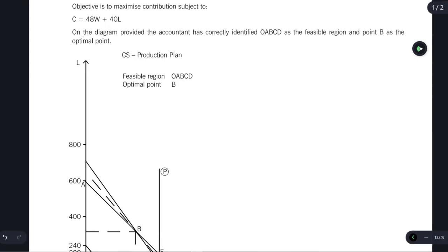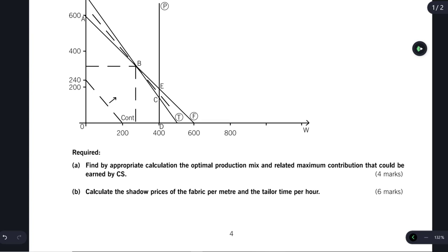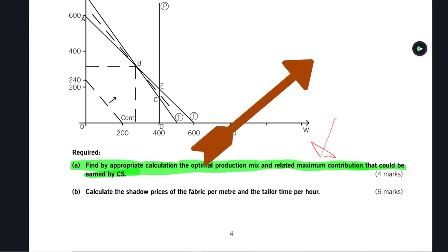In a previous video, I took you through part A. Find, by appropriate calculation, the optimal production mix and the maximum contribution that could be earned by Cut and Stitch. I recommend you go back at this point if you are fuzzy on linear programming, you can spend an extra 20 minutes and review part A in my previous video. When you're done with that, you can come right back here. However, if you are up to speed on linear programming and solving limiting factors questions with multiple constraints, then just keep watching right now.